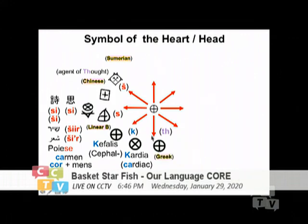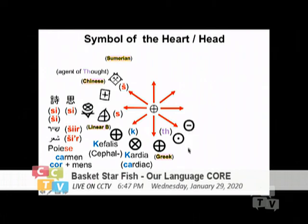Ancient Greek started with this symbol and later developed into the 'th' — theta — sound, going through different stages before finally becoming the theta you know. The word 'thumos' in Greek actually means the heart, and it also means passion — that is why 'thermal' also comes from this, because it is the heat from the heart, your desire, the warmth from your heart.